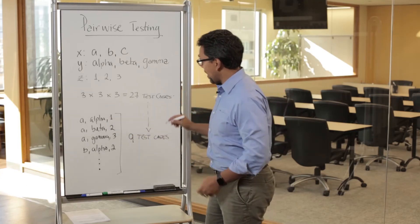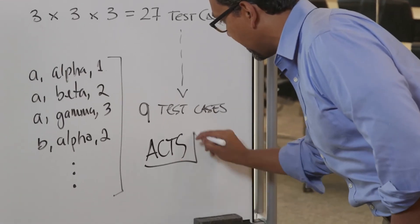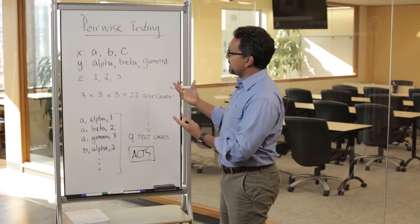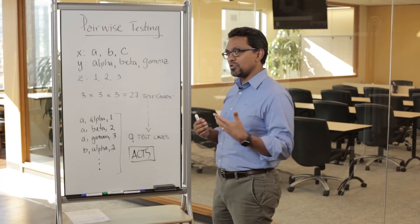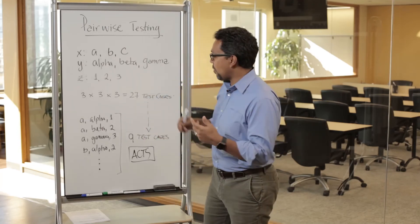The tool that I would recommend you to use is called ACTS, and it's freely available. You can download it and use it. You can instrument the system that you want to generate this input for, and also it allows you to explicitly say some constraints.